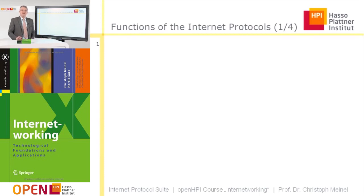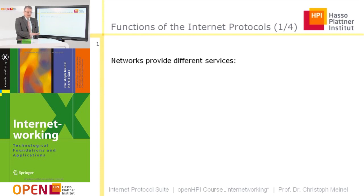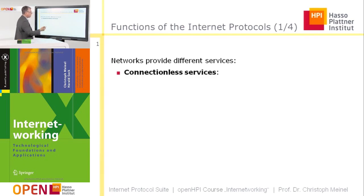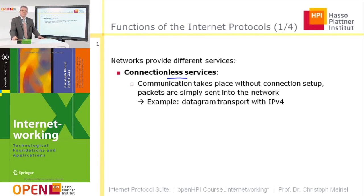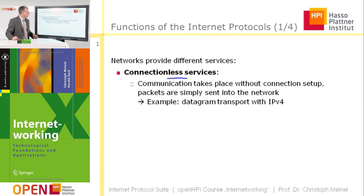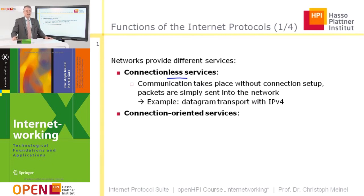We want to discuss the different functions of internet protocols. Physical networks provide two different types of services. One type provides a connectionless service, where communication takes place without the establishment of a connection. Communication is done in the form of transmitting packets sent through the network. An example of such a connectionless service is datagram transport with IPv4.